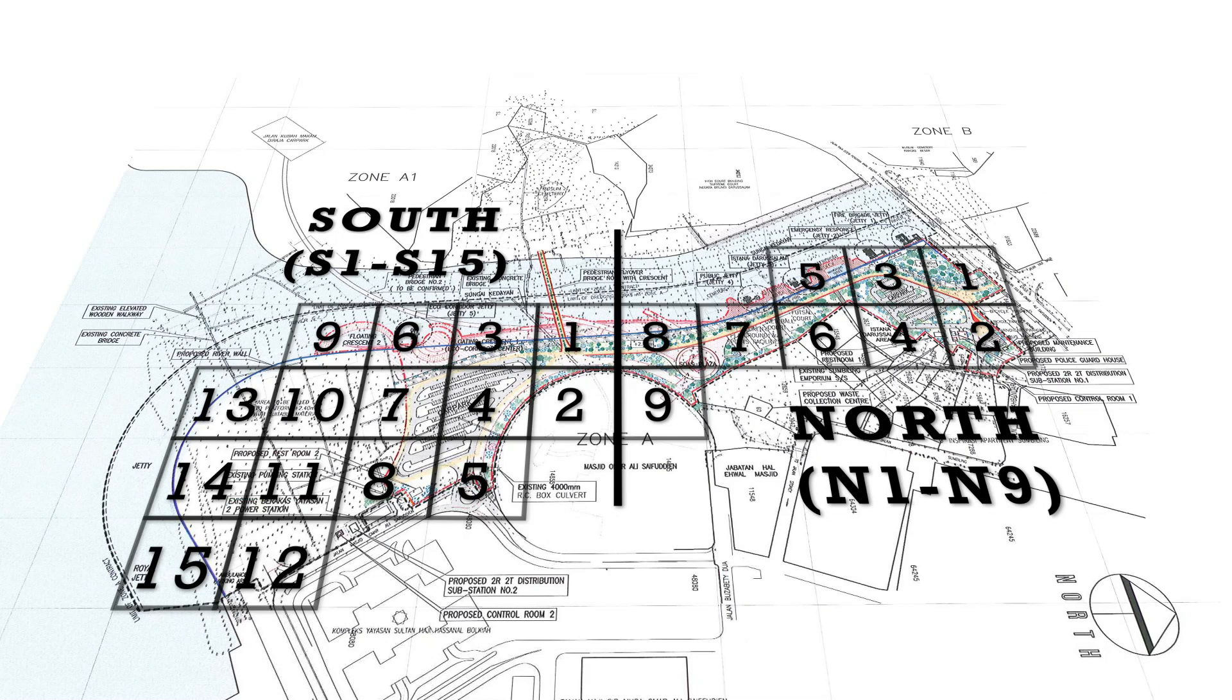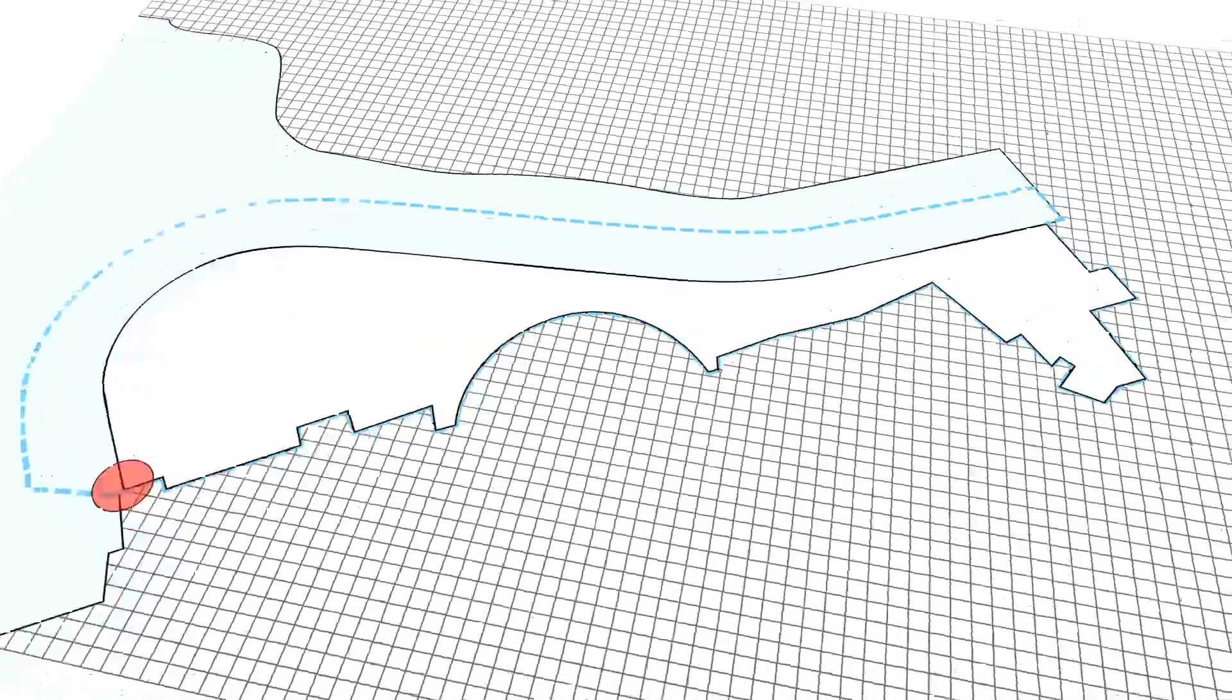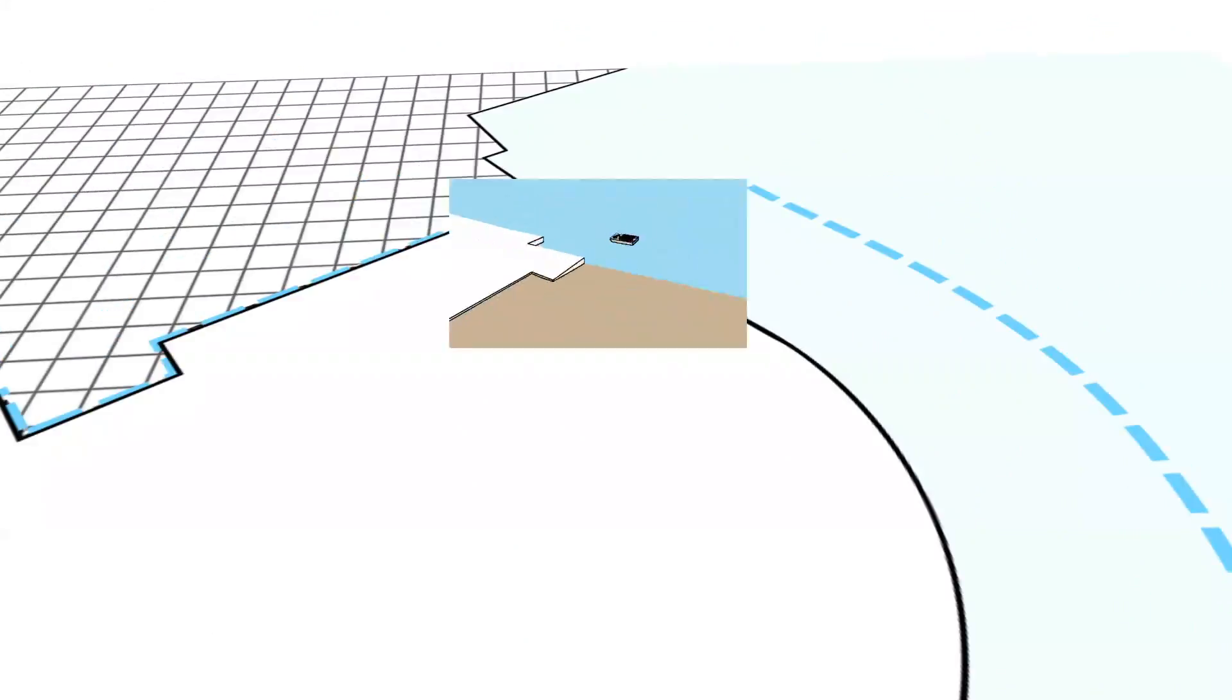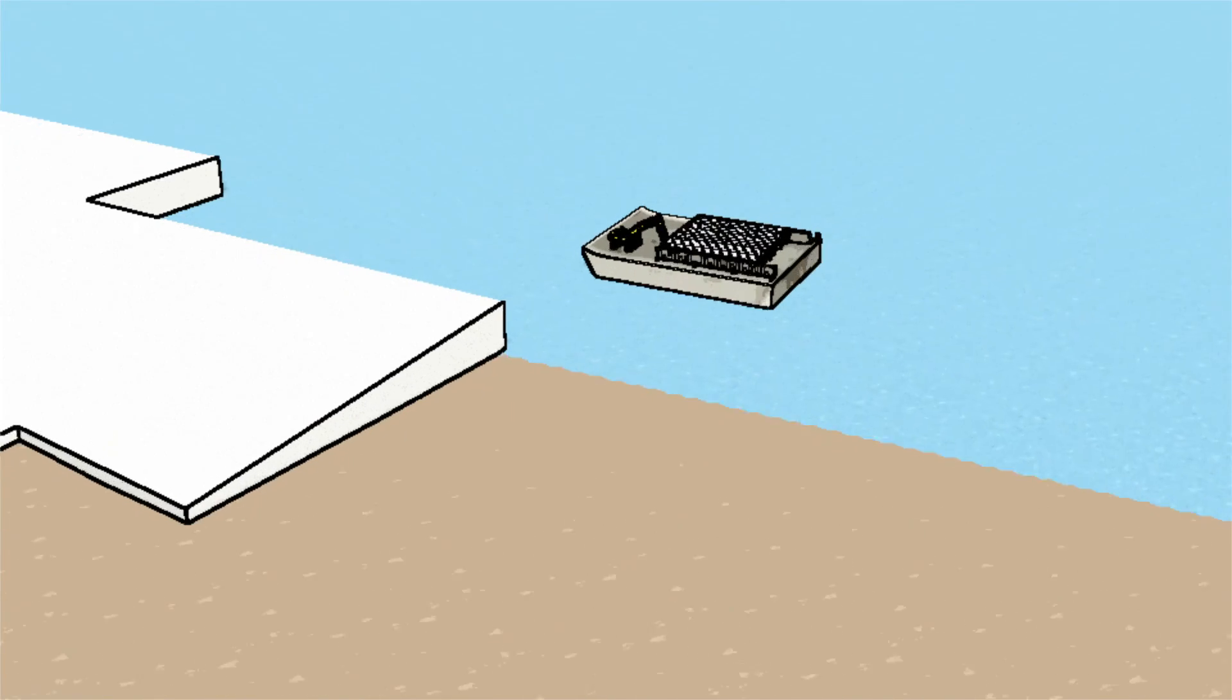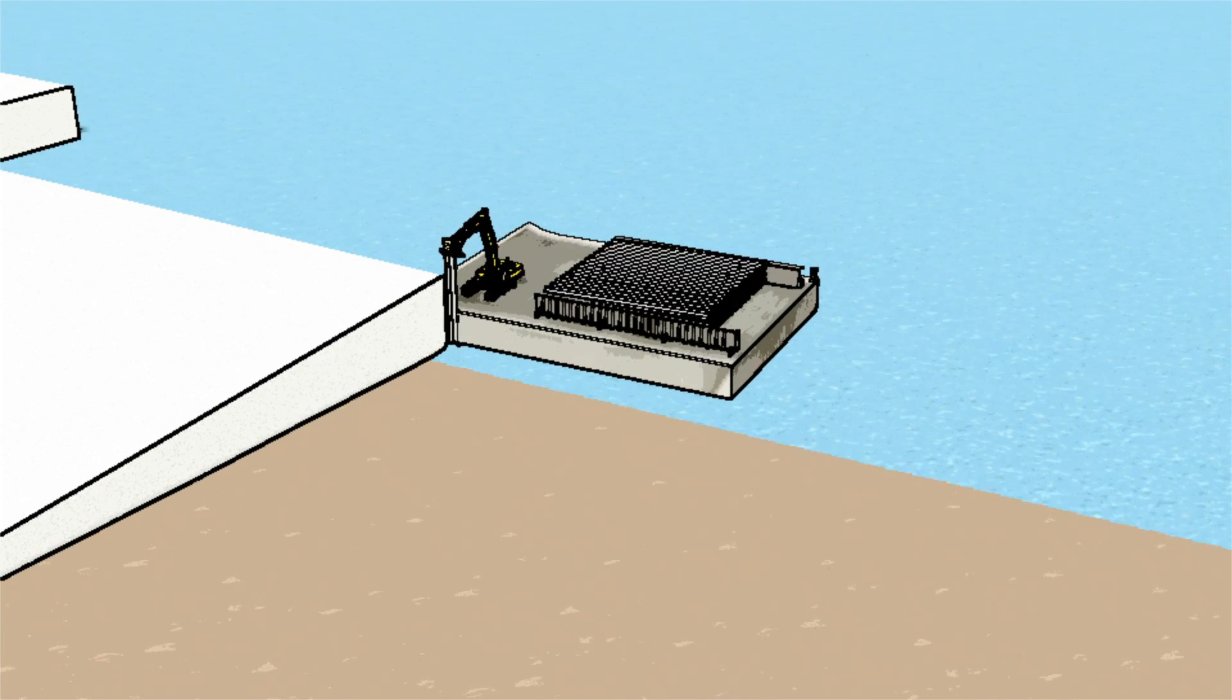Works will start simultaneously at both South and North areas, and these are temporary works so that permanent works can be carried out. In the South Area, metal sheet piles will be installed as protection to the bund construction, which will act as a working platform for piling works and also as a subdividing barrier for backfilling works.